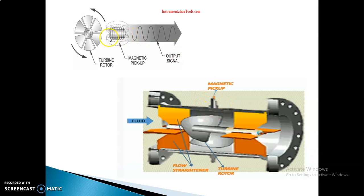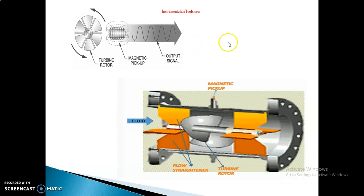The magnetic pickup creates a pulse signal, which is essentially the AC signal. This signal is amplified using a pre-amplifier. The amplified signal then goes into an electronic counter, also called a flow computer. The electronic counter counts the number of pulses generated.